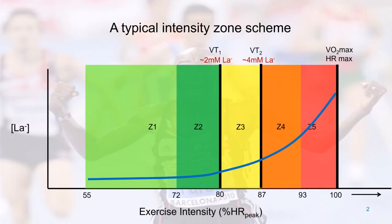We use five intensity zones for the aerobic intensity range here in Norway. This is from the Norwegian Olympic Federation. We think it's a good idea to have the same language even across different sports. There may be some small distinctions comparing cycling versus running and so forth, but having all the athletes and coaches speak the same language — the benefits of that seem to outweigh the negative side.